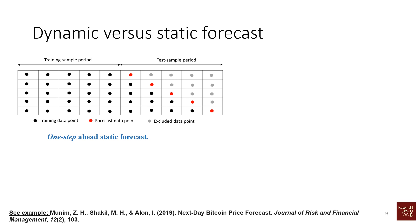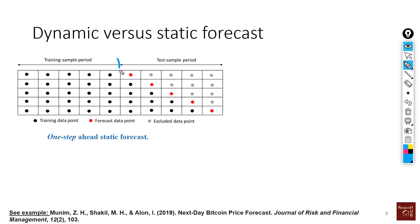Here we see a one-step ahead static forecast. We divide our data points into two parts: training sample and test. What we do is forecast only one period ahead. Then when a new data point becomes available, we again forecast only one period ahead. When another data point is available, we again forecast one period ahead — we always forecast one period ahead and keep moving.